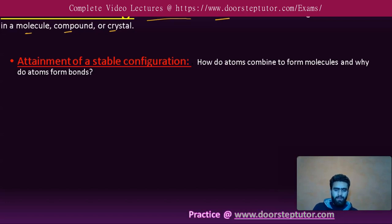Let's take an example. Suppose we have a molecule A-B. This bond is represented by a dash. This dash, which is called a bond, represents the force of attraction — the force that holds the atoms together. That force is actually called a chemical bond.